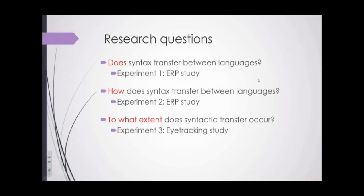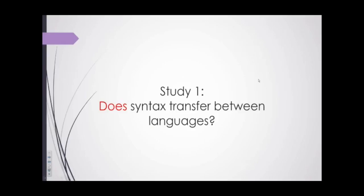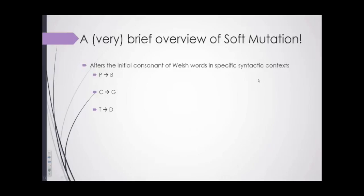So does syntax transfer between languages? In order to answer this question, we decided to utilize a syntactic rule that's idiosyncratic to Welsh and apply it to English sentences. And that rule is the rule of soft mutation — a morpho-syntactic process that alters the initial consonants of words when they're placed in specific syntactic contexts. So for example, the word 'pabell,' which is tent in Welsh, would mutate to 'babell.' But these mutations don't just occur randomly — they have to be in specific contexts.